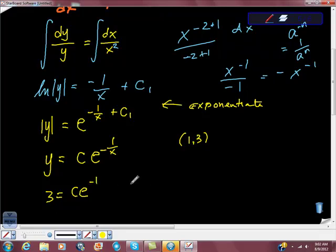It means the same as saying this: 3 is equal to c over e. That's the negative exponent again. That makes it go down to the denominator.